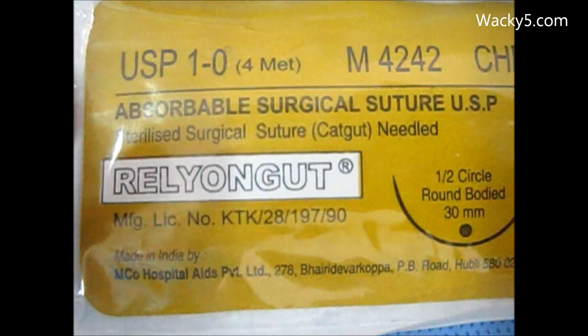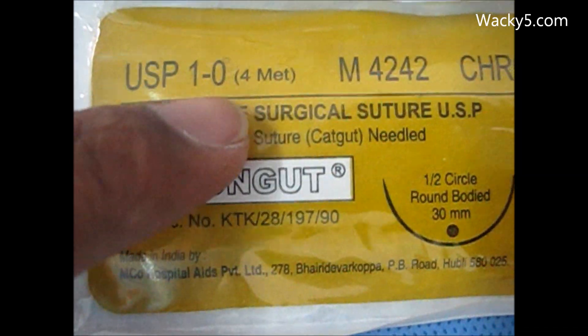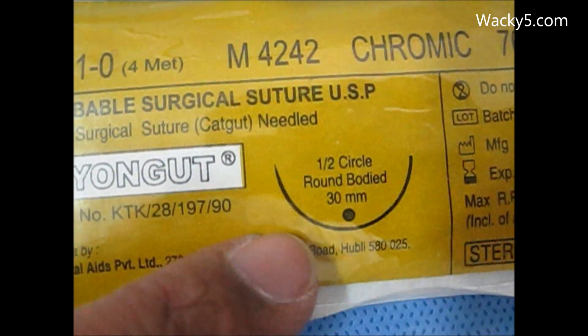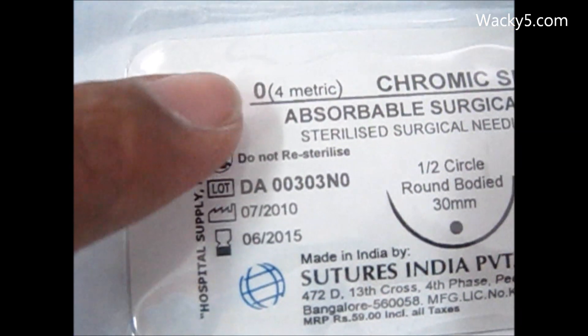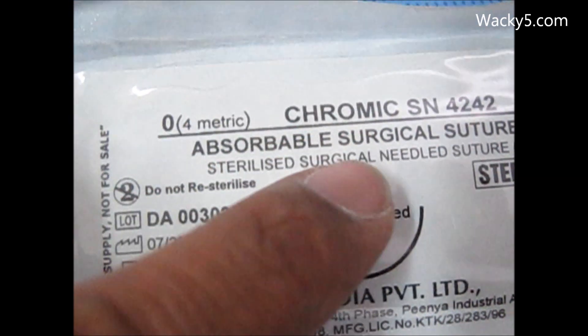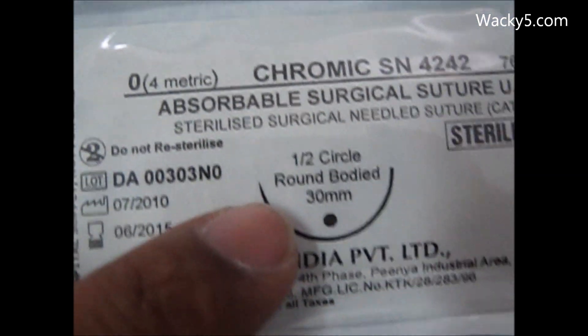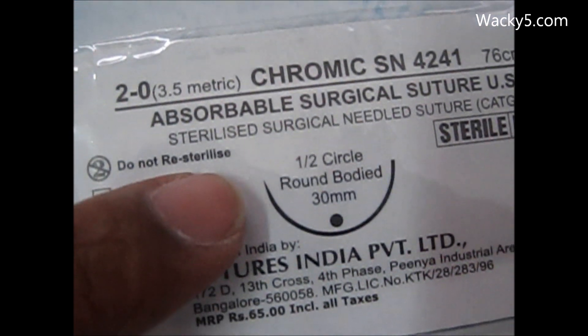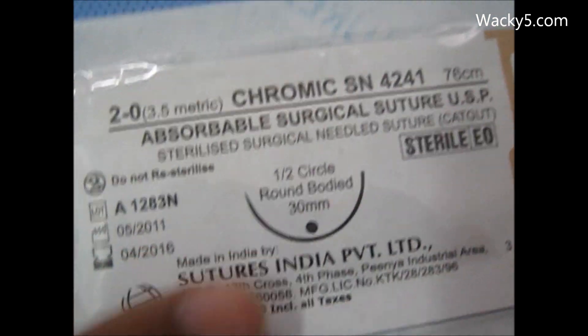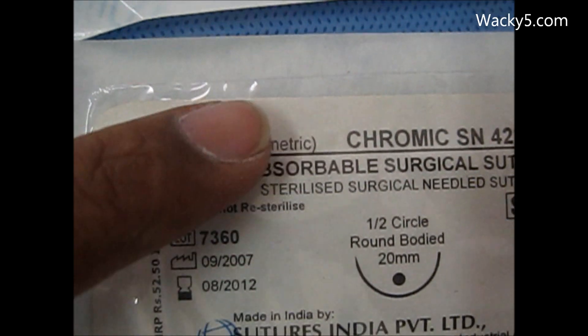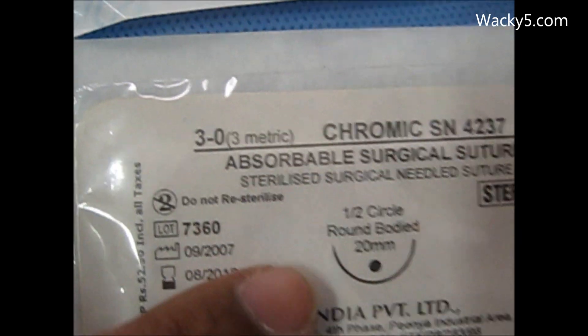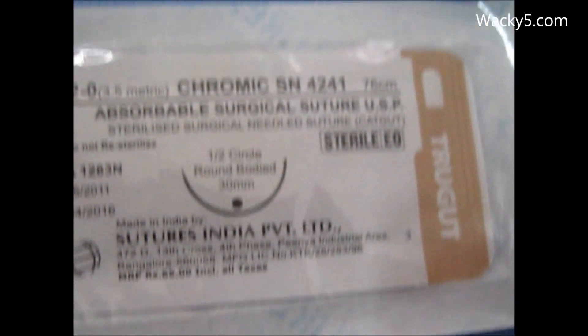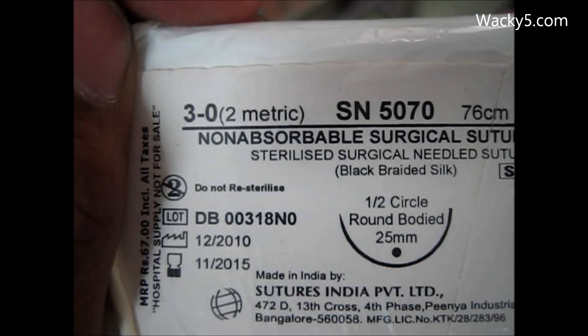Now have a look at this absorbable surgical suture. You can see a 30 millimeter, half-rounded bodied needle. This circle shows the needle. You see 2-0 here, and it will be 3-0 — so 3-0 will be more finer.